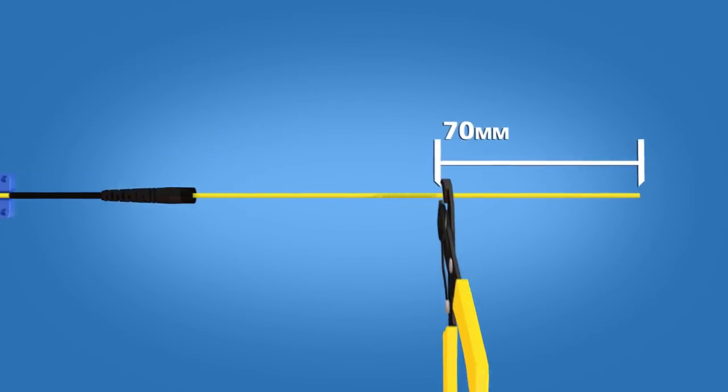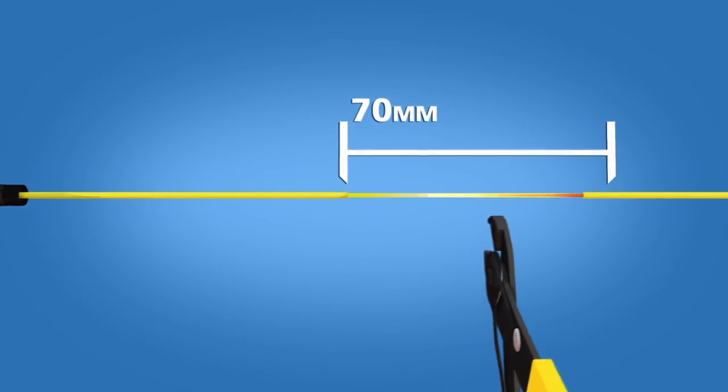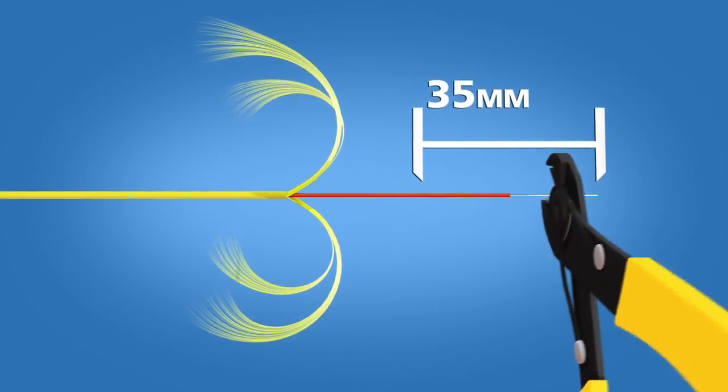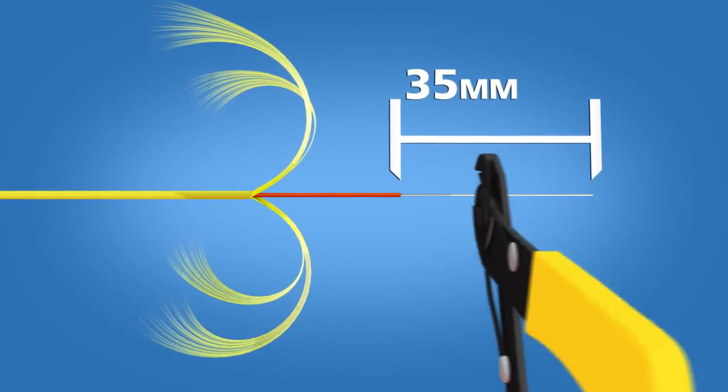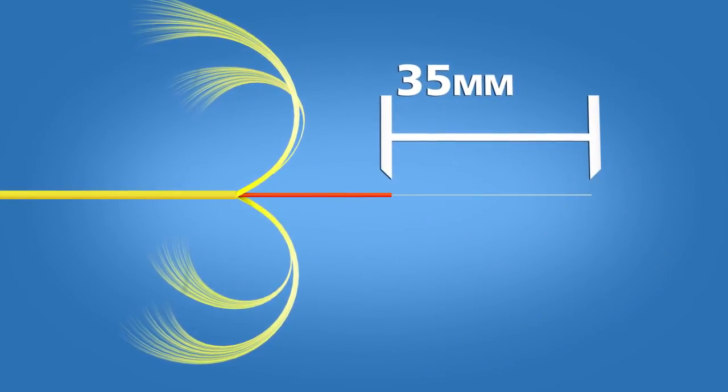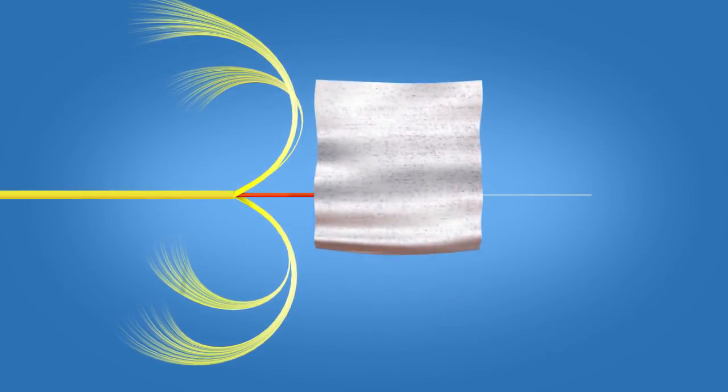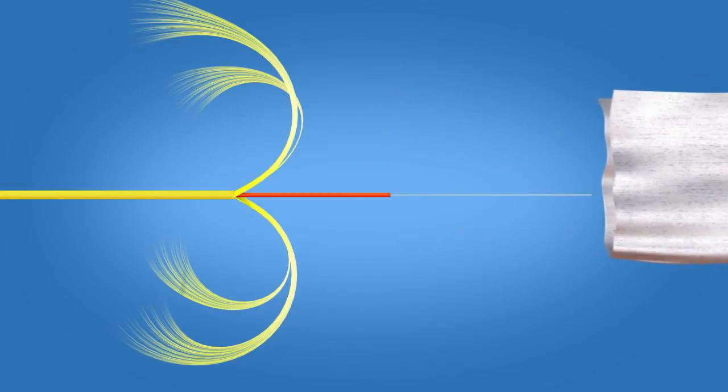Remove 70 mm of cable jacket. Strip 35 mm of 900 micron and 250 micron coating off. Clean the fiber with a lint-free wipe and fiber preparation fluid.